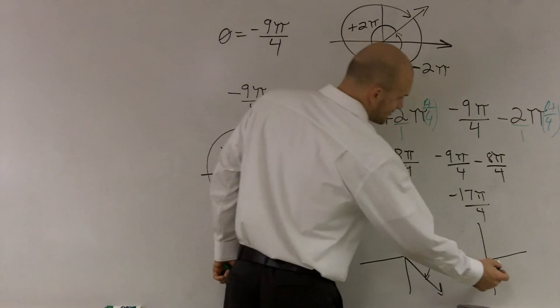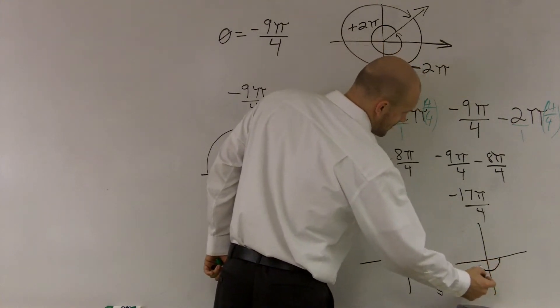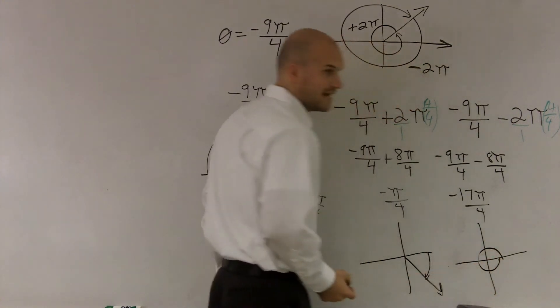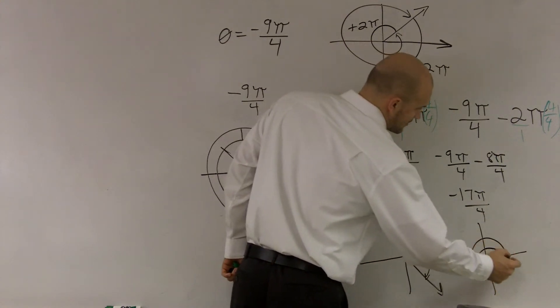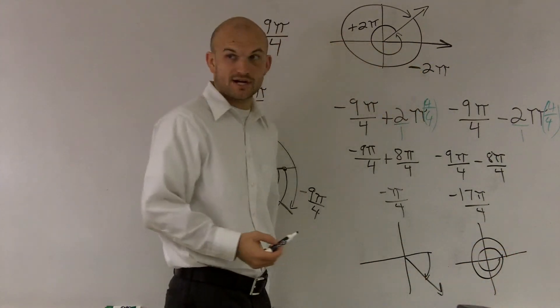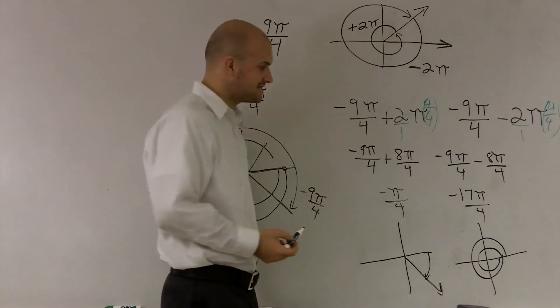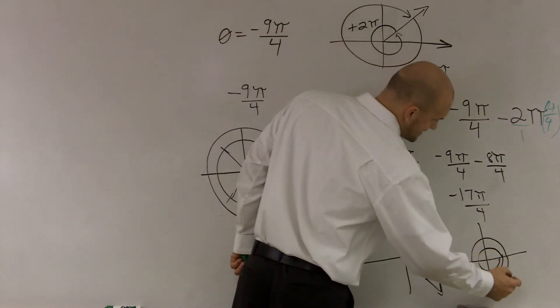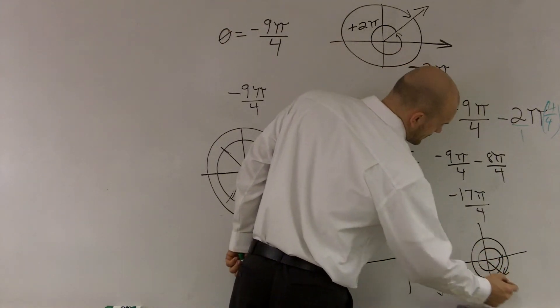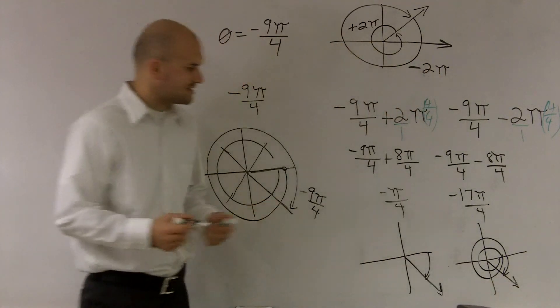And this one would be, wrap around once, which is negative 8π. Negative 8 over 4, that's negative 16 over 4. So negative 17 over 4 would be right there, which is the exact same thing.